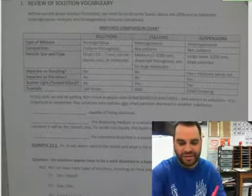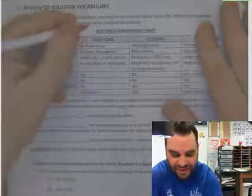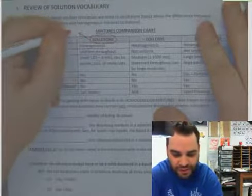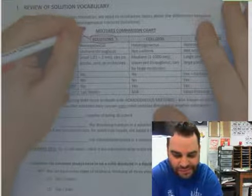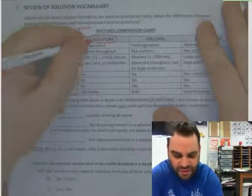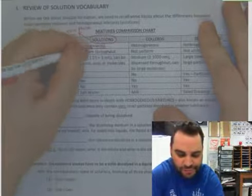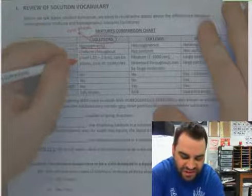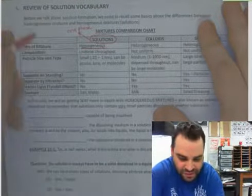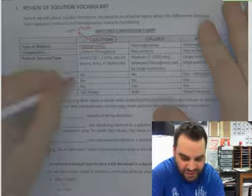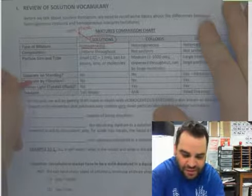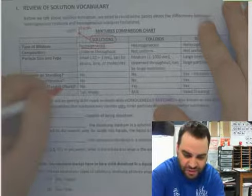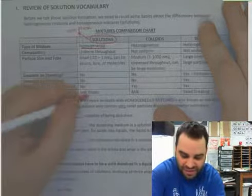Remember, there are three types of mixtures. We have solutions, which are one phase. Another word for solution is homogeneous mixture. These are uniform throughout. The particles are so small you can't see them. You cannot separate upon standing. You cannot filter them. And the Tyndall effect, remember, scattering of light, so you cannot scatter light on the solution. Example would be salt water.